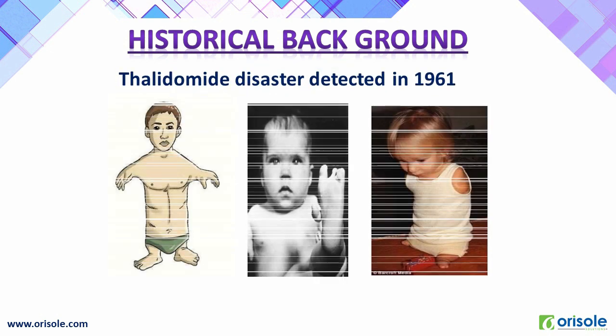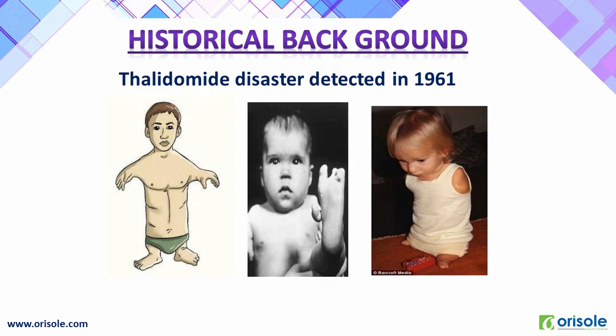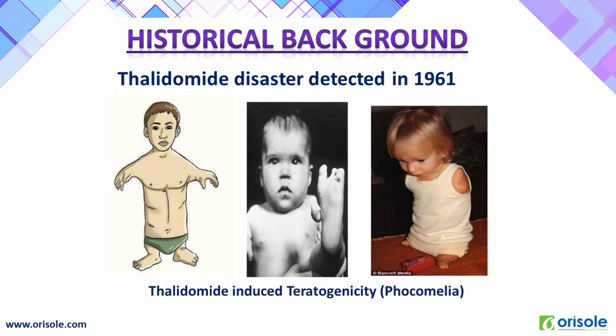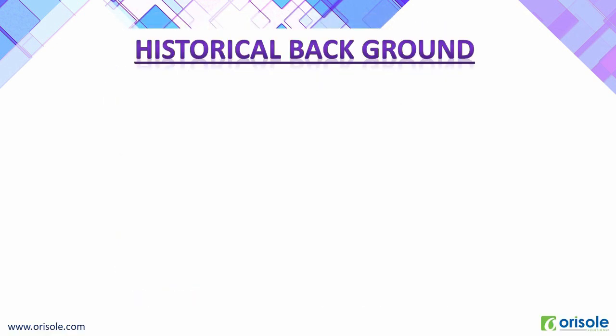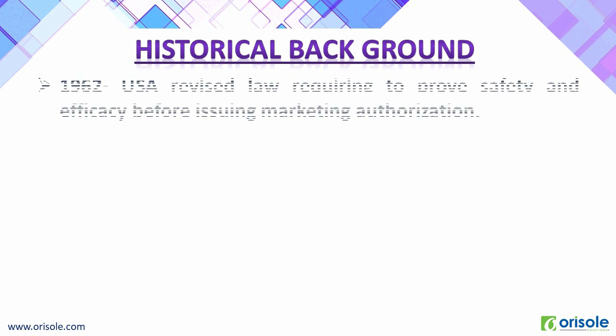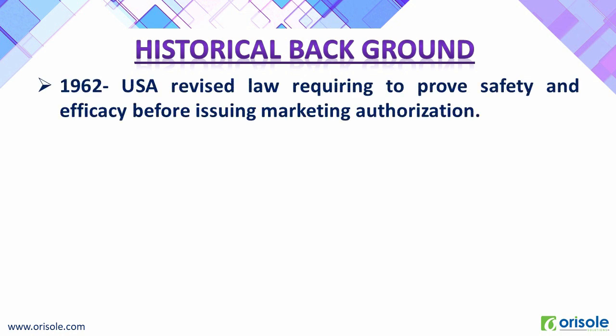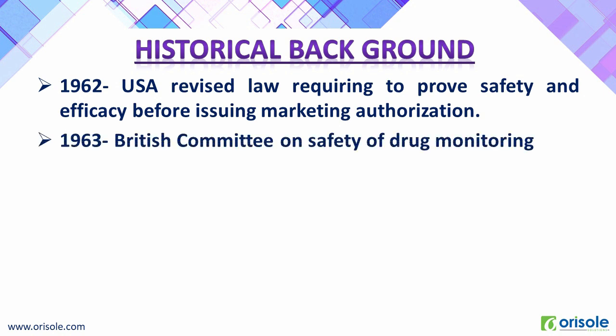Between 1959 and 1961, around 20,000 cases were reported with fetal abnormalities, with the maximum cases in Germany. This is called the thalidomide disaster, detected in 1961. Thalidomide induced teratogenicity, i.e., phocomelia, in newborn babies. Because of that, in 1962, the United States of America revised law requiring proof of safety and efficacy before issuing marketing authorization.